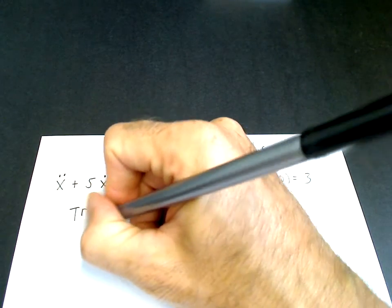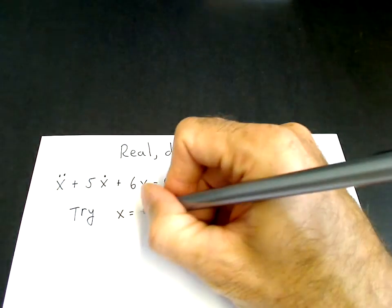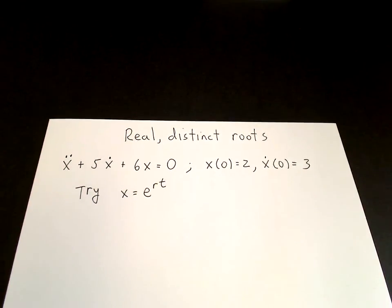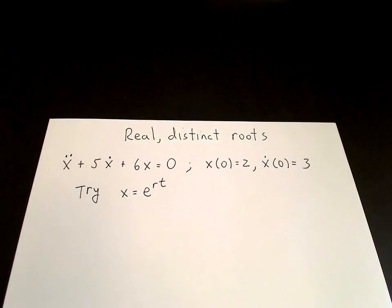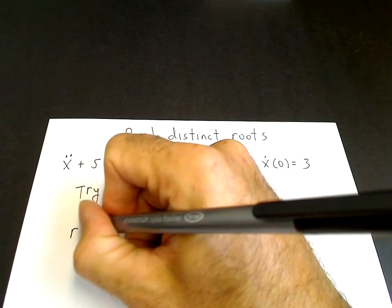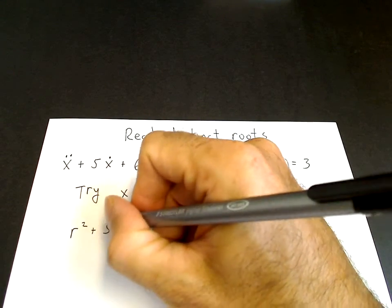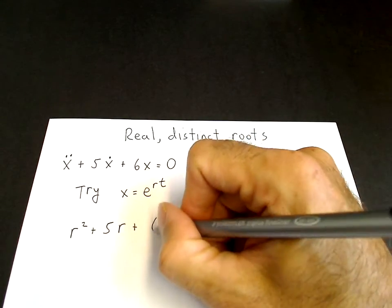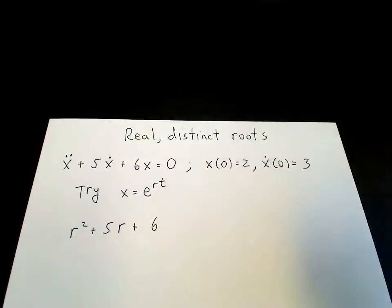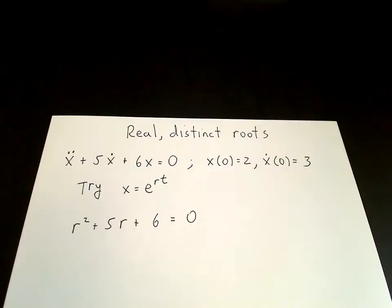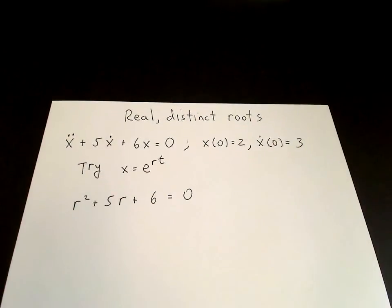We try our ansatz x = e^(rt). We substitute into the differential equation and use the fact that the e^(rt) will cancel. So the second derivative brings down r², plus 5 times the first derivative brings down an r, plus 6 times the e^(rt) which cancels, equals 0. So we get our characteristic equation, which is a quadratic equation in r.